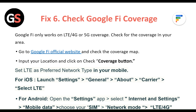Set LTE as the preferred network type on your mobile. For iOS, launch Settings then General then About then Carrier, and select LTE. For Android, open the Settings app then select Internet & Settings then Mobile Data, choose your SIM, and set network mode to LTE/4G.